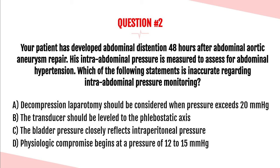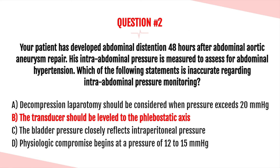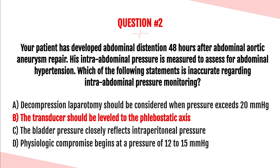Question number two. Your patient has developed abdominal distention 48 hours after abdominal aortic aneurysm repair. His intra-abdominal pressure is measured to assess for abdominal hypertension. Which of the following statements is inaccurate regarding intra-abdominal pressure monitoring? A, decompression laparotomy should be considered when pressure exceeds 20 mmHg. B, the transducer should be leveled to the phlebostatic axis. C, the bladder pressure closely reflects intraperitoneal pressure. Or D, physiologic compromise begins at a pressure of 12 to 15 mmHg. We're looking for the inaccurate choice — and that is B. The transducer should not be leveled to the phlebostatic axis; it is leveled to either the symphysis pubis or the iliac crest, depending on your hospital policy.